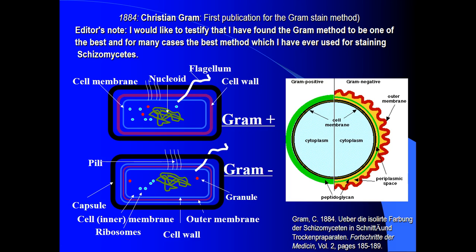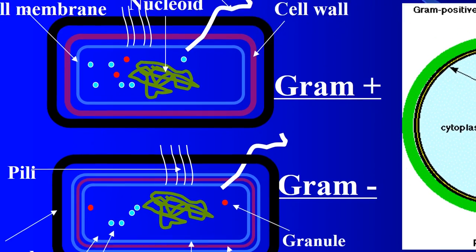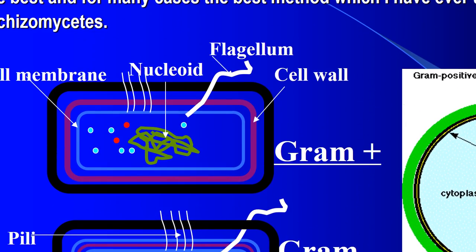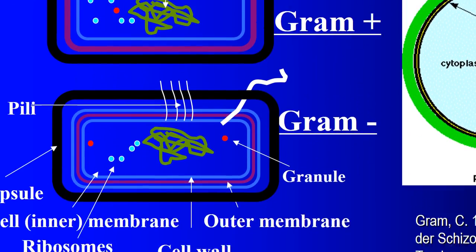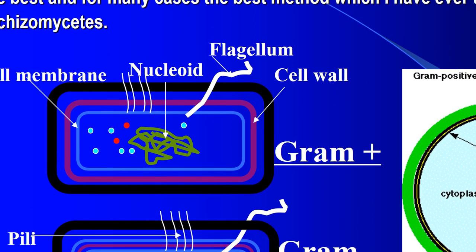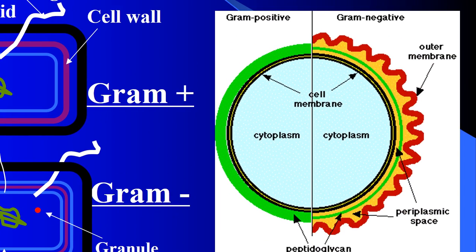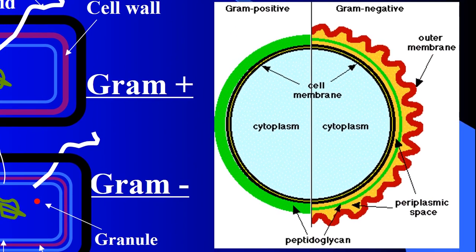There is one bacteria which has cell walls and another one has no cell walls — gram positive and gram negative bacteria. Gram positive bacteria have peptidoglycan.